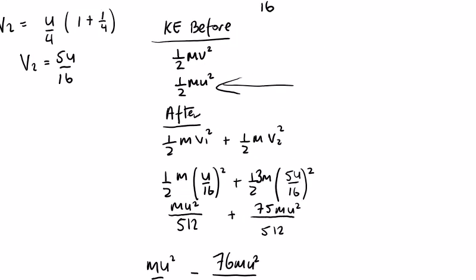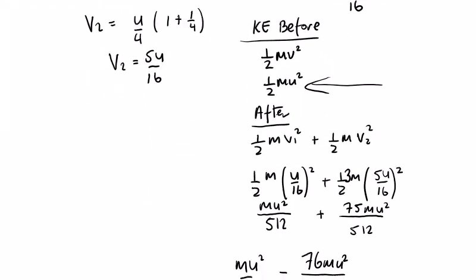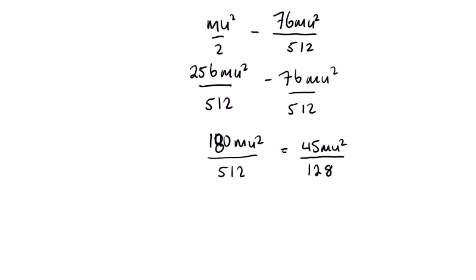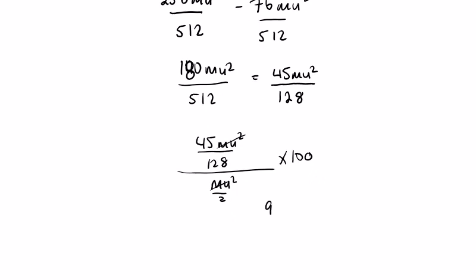We're also asked for the percentage loss in kinetic energy. Percentage loss = (loss / initial KE) * 100 = (45mu²/128) / (mu²/2) * 100. Cancelling mu² gives 90/128 * 100, which works out to approximately 70.3%.